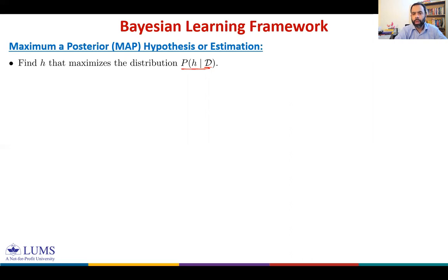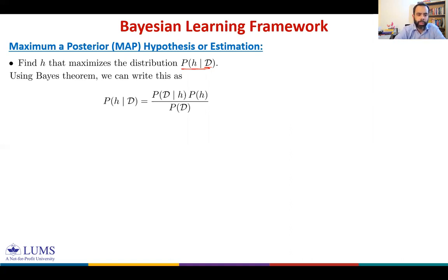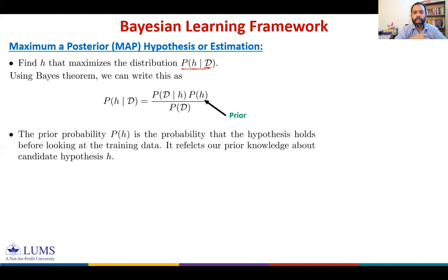To compute P(h|D), we employ Bayes' theorem to reformulate it: P(h|D) equals P(D|h) times P(h) divided by P(D). We give special names to each of these terms. P(h) is the probability of the hypothesis being true — this is called the prior probability. It reflects our belief about h coming from past experiences. The prior probability is the probability that the hypothesis holds before we look at training data, so P(h) does not depend on the data.